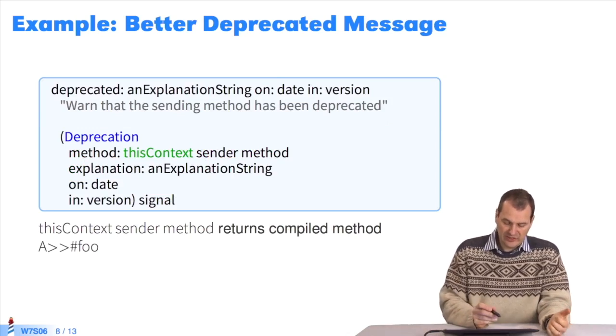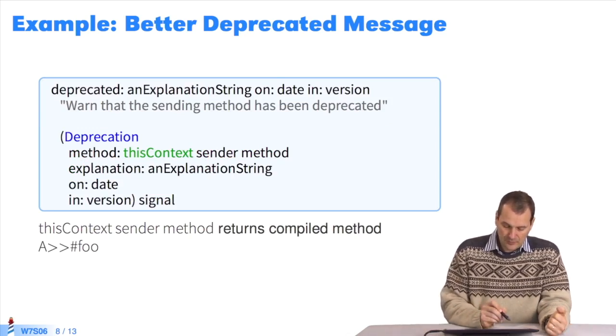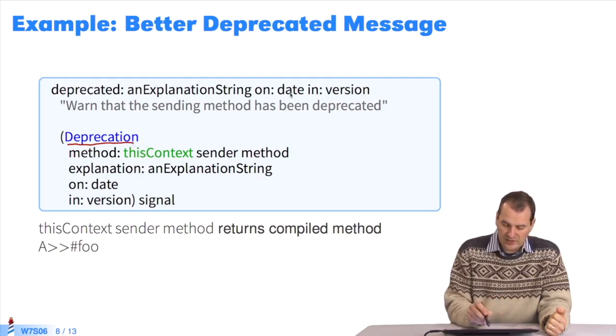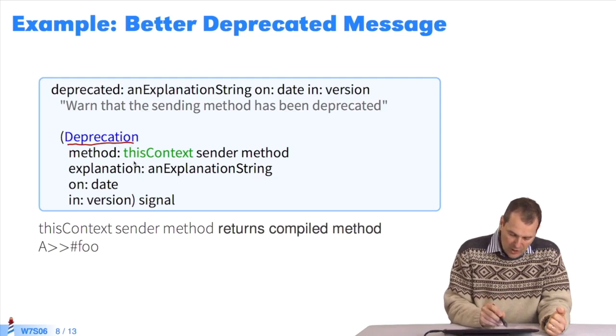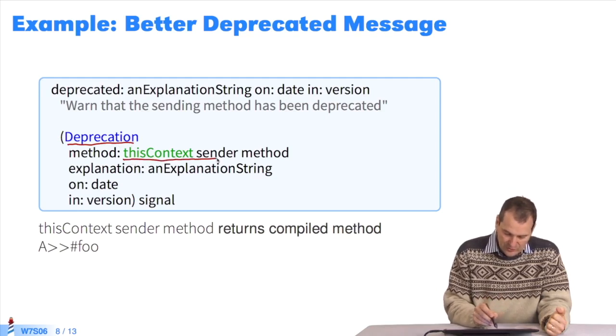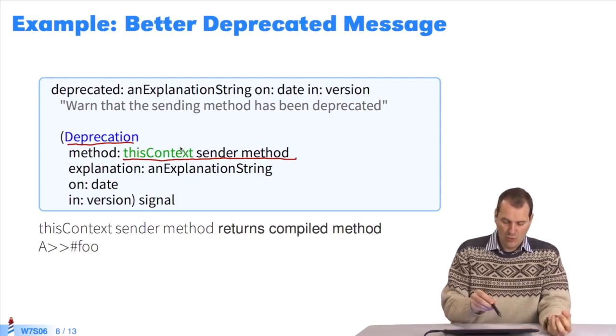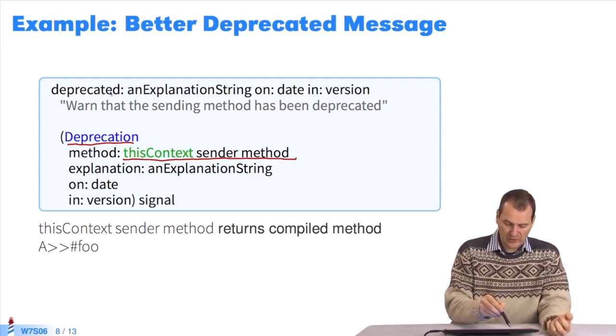The message deprecated is an exception, deprecation. The system takes the arguments, an explanation string, and so on, and adds the expression thisContextSender method. This context is the stack at the time of execution of the deprecated method.